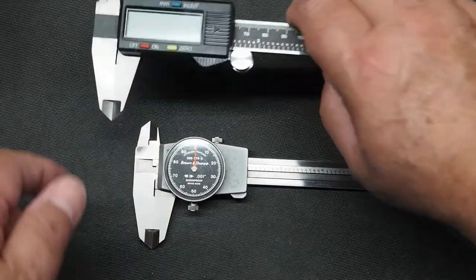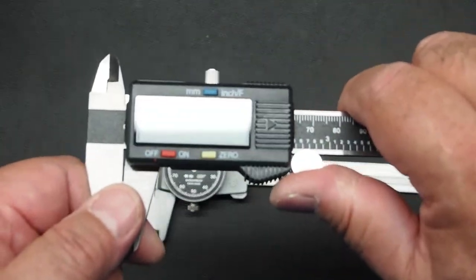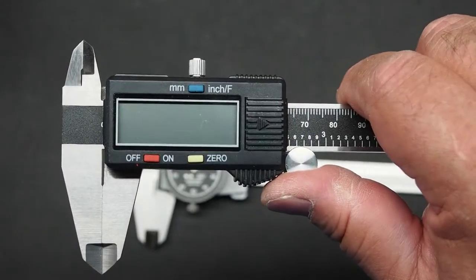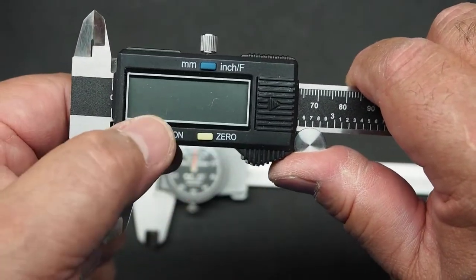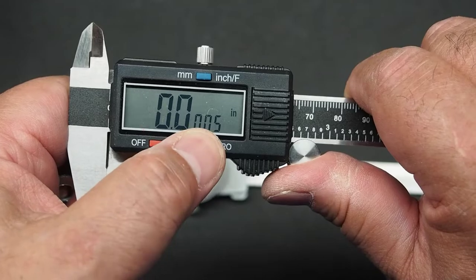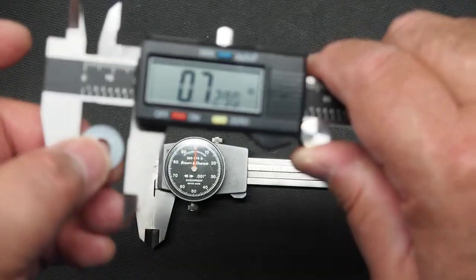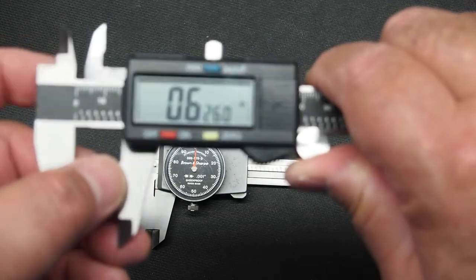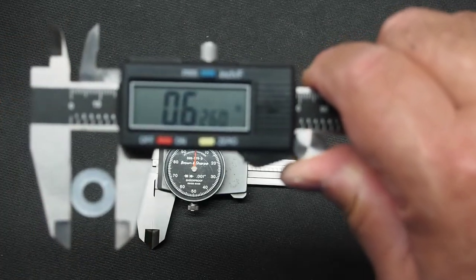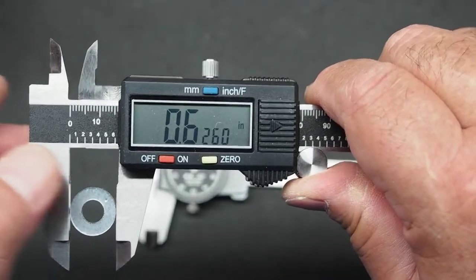And so today we have digital calipers. These things are really fantastic. I really enjoy using these. Now we turn these on. And first thing I want to do is zero it. And then I can make my measurements. And they read directly on the display. And you can see what the measurements are.